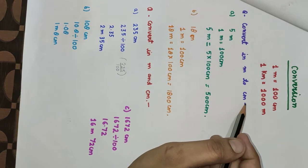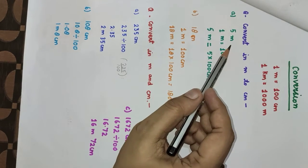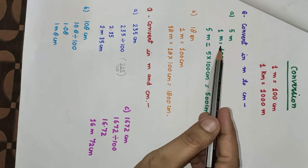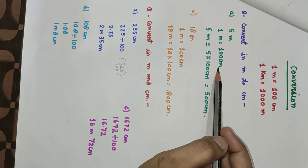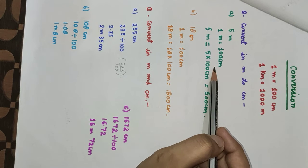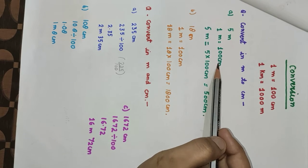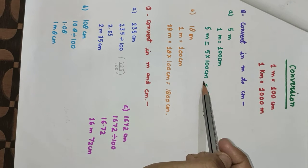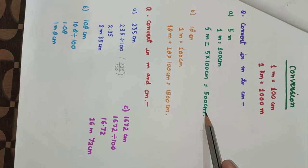Now we have to convert meters to centimeters. Here is 5 meters and we have to convert into centimeters. 1 meter equals 100 centimeters, then 5 meters equals 5 multiplied by 100 centimeters. So the answer is 500 centimeters.